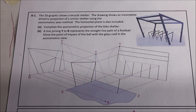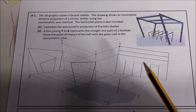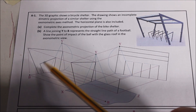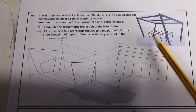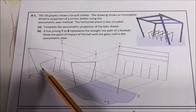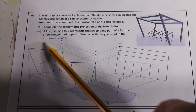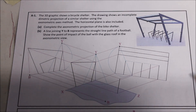The first thing we're doing in Part A is complete the axiometric projection of the bike shelter. If you look at, we have our end view here and we have our elevation. The end view is giving you your points for the bike racks, also giving you the points for the actual shelter itself. So we're going to complete that.